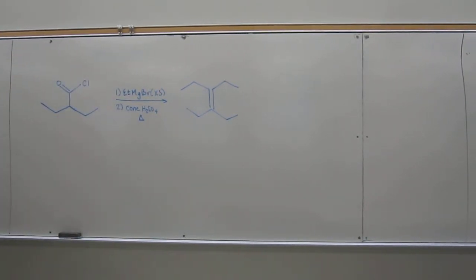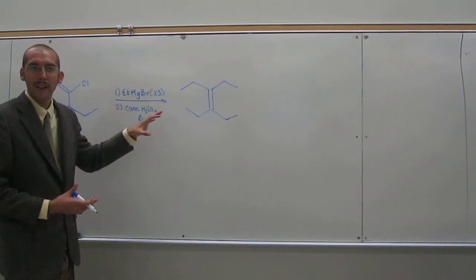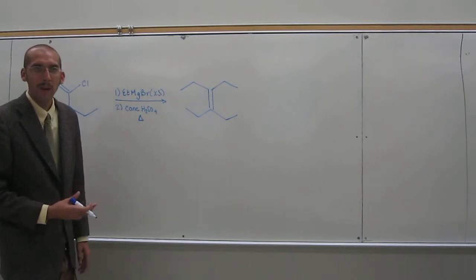Okay, so what's going to happen? First is the Grignard addition to the acid chloride making the ketone intermediate, then addition again to that ketone making the alkoxide. In this case, it will be a tertiary alkoxide, okay? Then when you add acid to that,